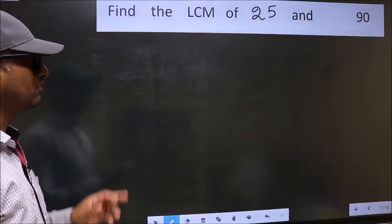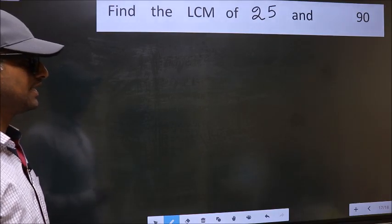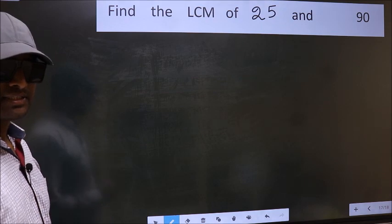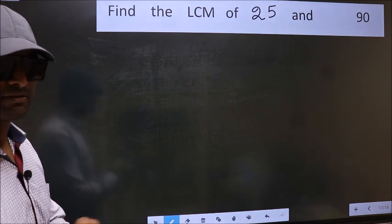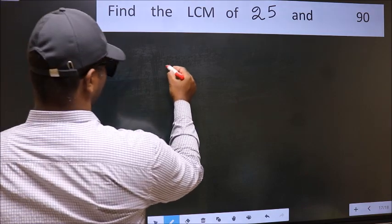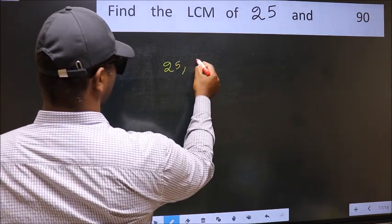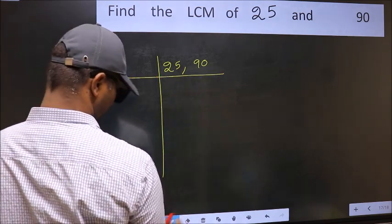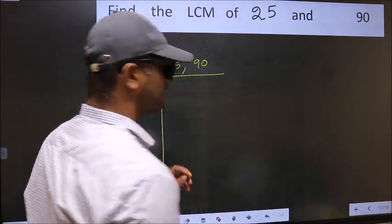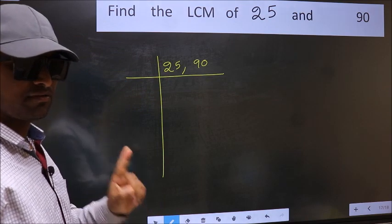Find the LCM of 25 and 90. To find the LCM, we should frame it in this way: 25, 90. This is your step 1.